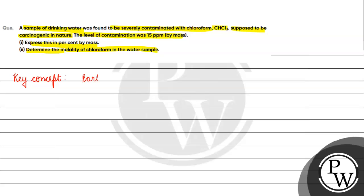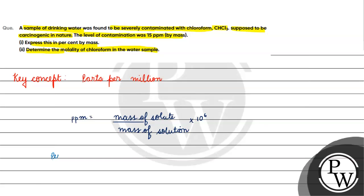PPM stands for parts per million by mass — it equals mass of solute by mass of solution multiplied by 10 to the power of 6. Percent by mass equals mass of solute by mass of solution multiplied by 100.